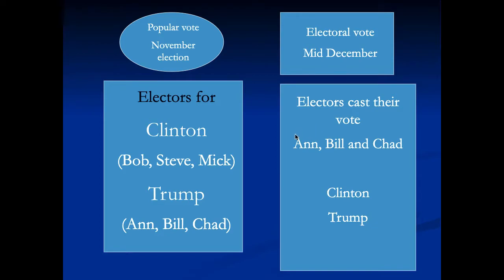Now they don't do that — 99% of electors vote the way the people have chosen. But they can, and that's part of the reason for the electoral college. The founders were concerned about whether the people were qualified enough to choose a leader; this was a completely new system. They wanted some kind of go-between, a safeguard in case the people chose somebody really bad — so electors could, in their better judgment, choose a better candidate. It hasn't actually worked out that way.